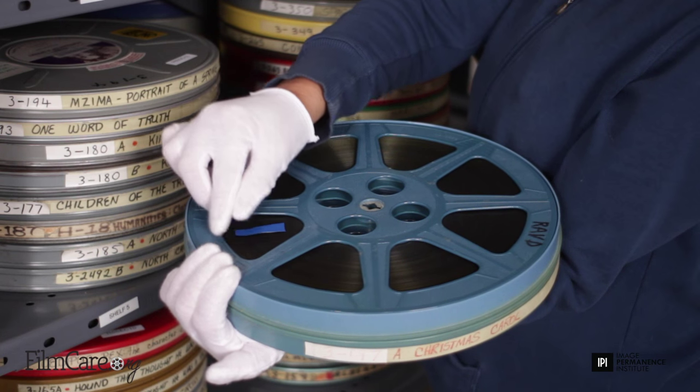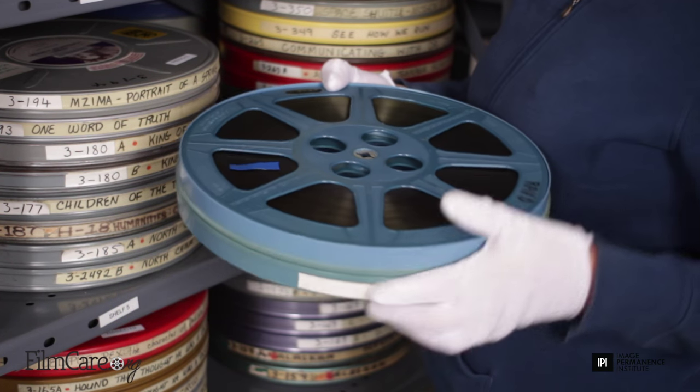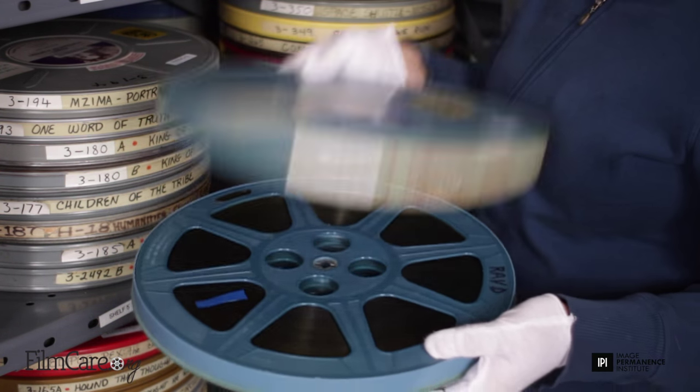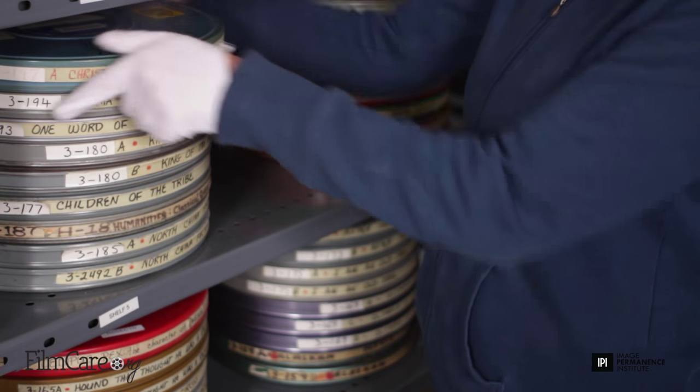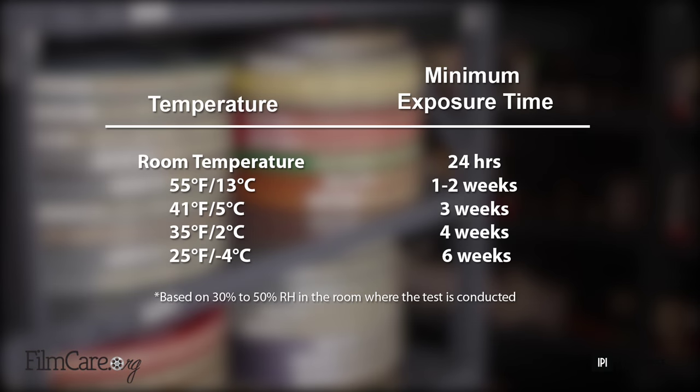Place the AD strip on top of the film within its enclosure. This can be done in the same room where the film is stored. After closing the container housing the film and AD strip, allow the correct amount of time to pass in order to see the results of the test.